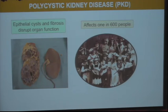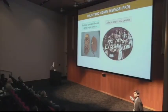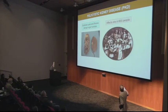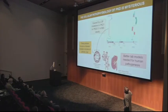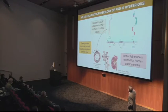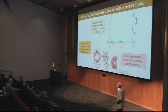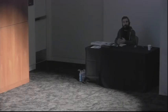PKD is extremely common, affecting one in every 600 people on the planet. There's no cure and it runs in families. We know this disease is caused by mutations in two proteins, polycystin 1 and polycystin 2, which form a complex at the primary cilium — an antenna-like organelle that sticks into the lumen of tubules. But we don't understand what the protein complex does or why mutations lead to fluid accumulation and cystogenesis. We really need human laboratory models to study this process.